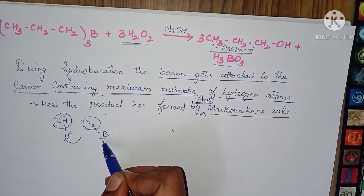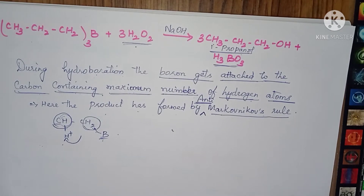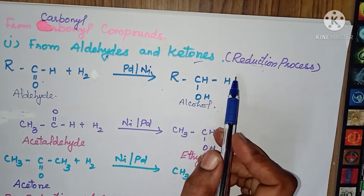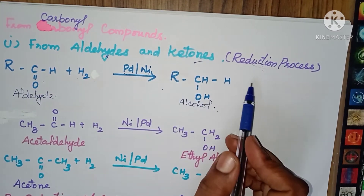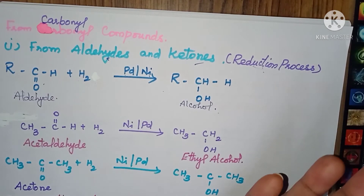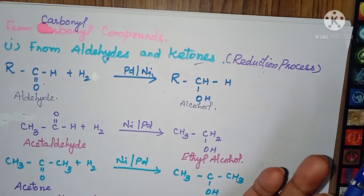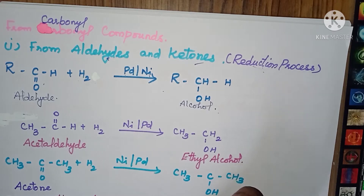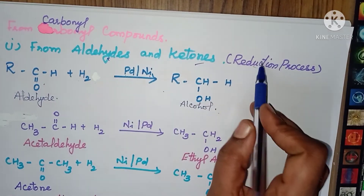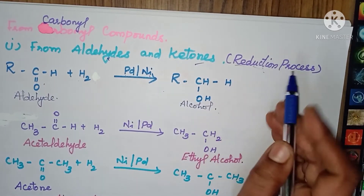Next we are going to look at carbonyl compounds — from a carbonyl compound, how do we get alcohol? From carbonyl compounds we get aldehydes, ketones, esters, and ethers. All these compounds are converted into alcohol through a reduction process. This is a common example, and we have even learned it in the aldehydes and ketones chapter.